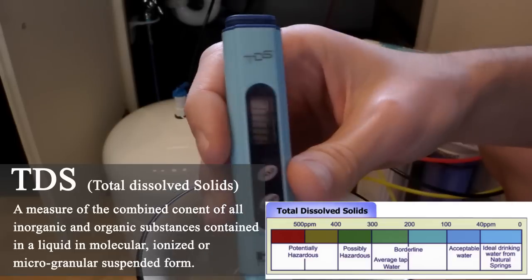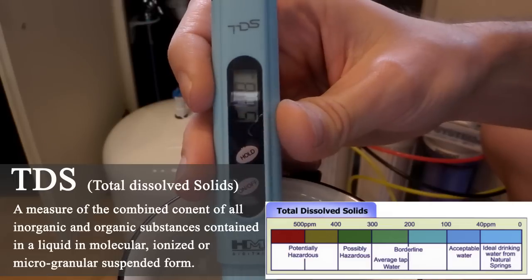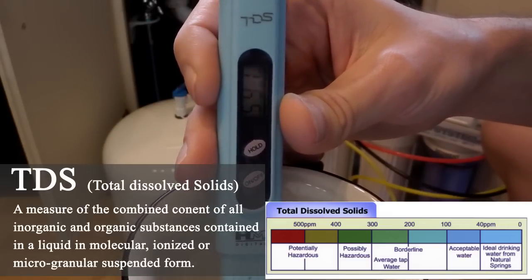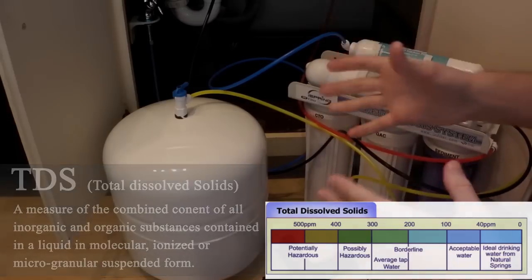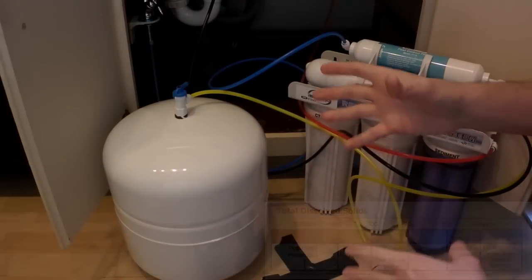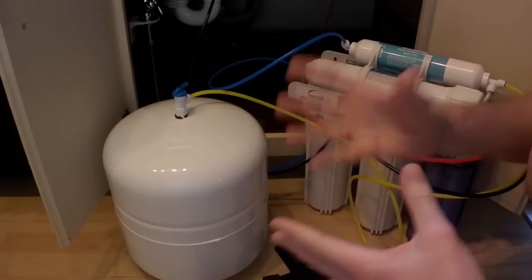And tap water, the tap water is around 590 parts per million. The reason why I absolutely love filtered water and I try to avoid tap water at all costs is because of what is in tap water.